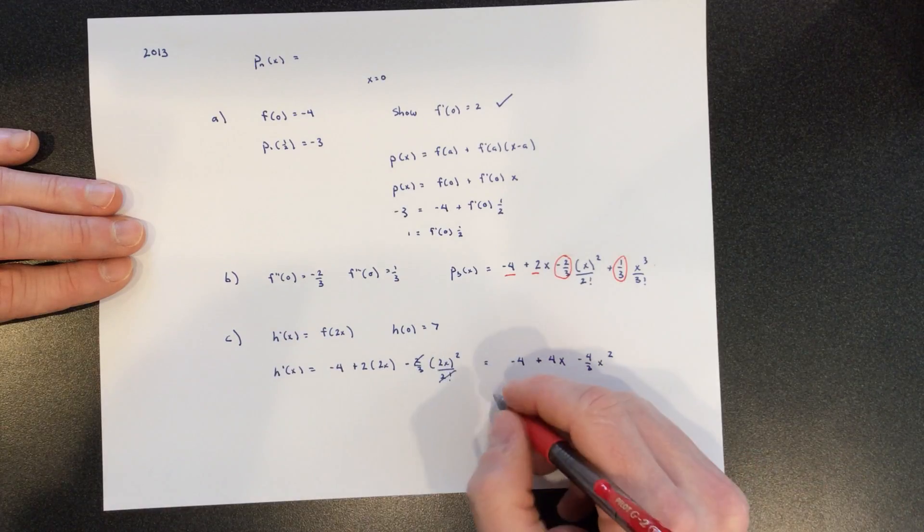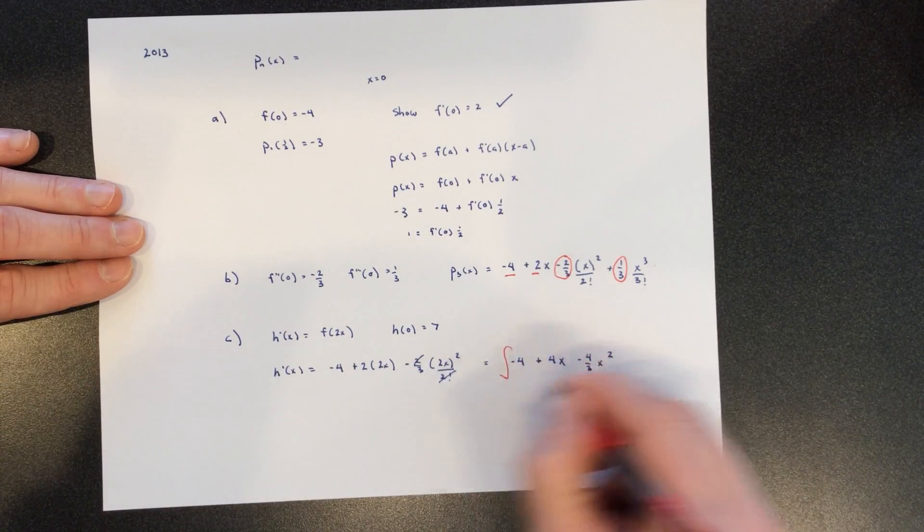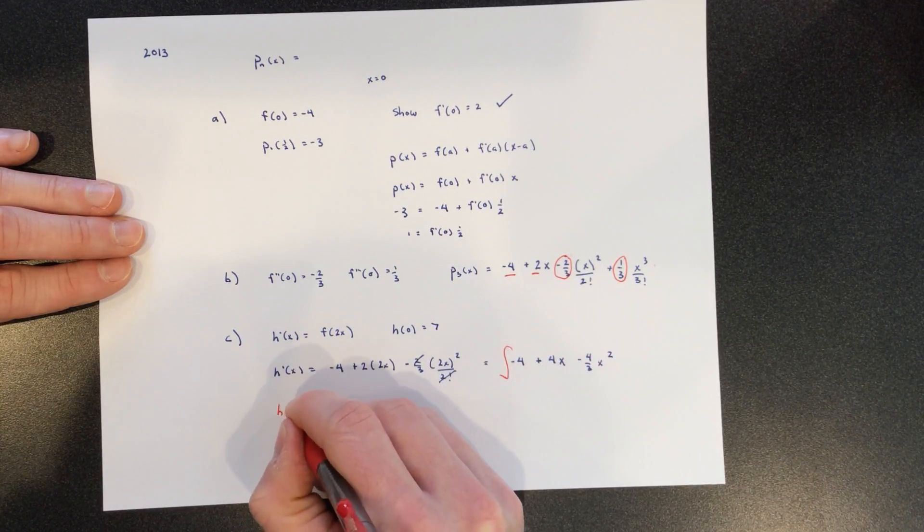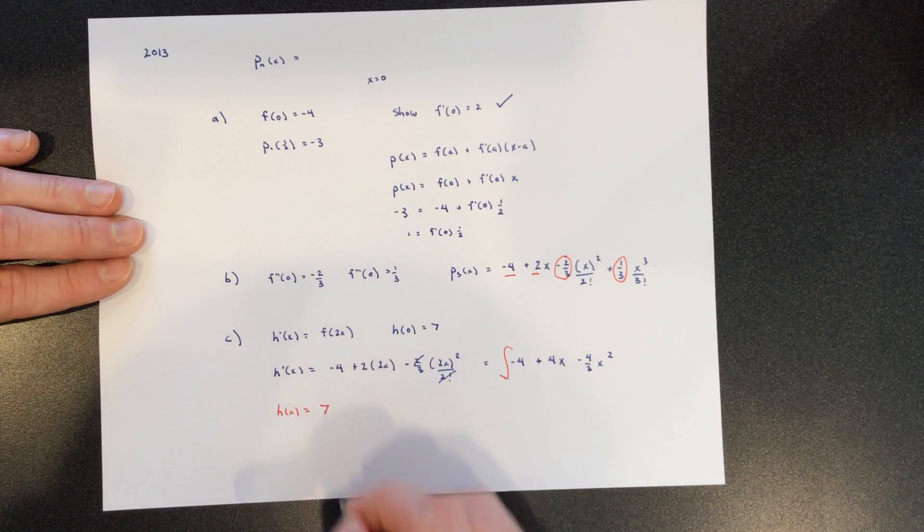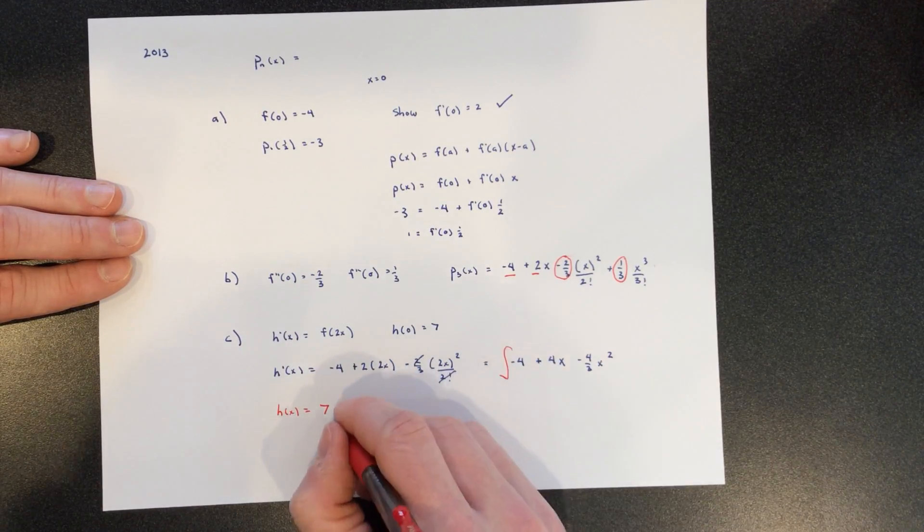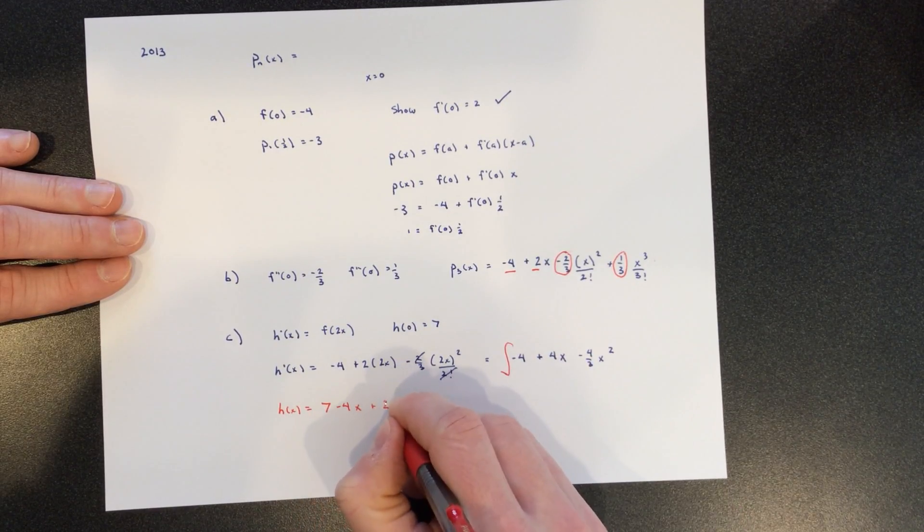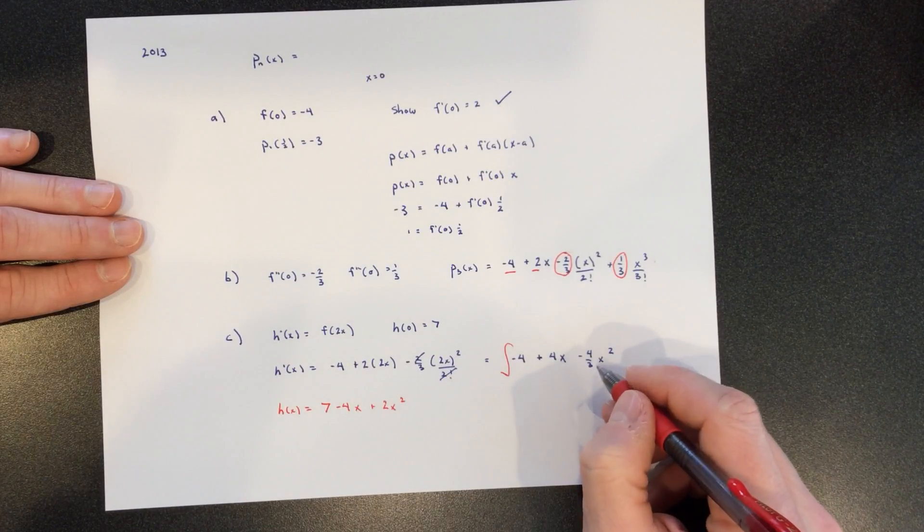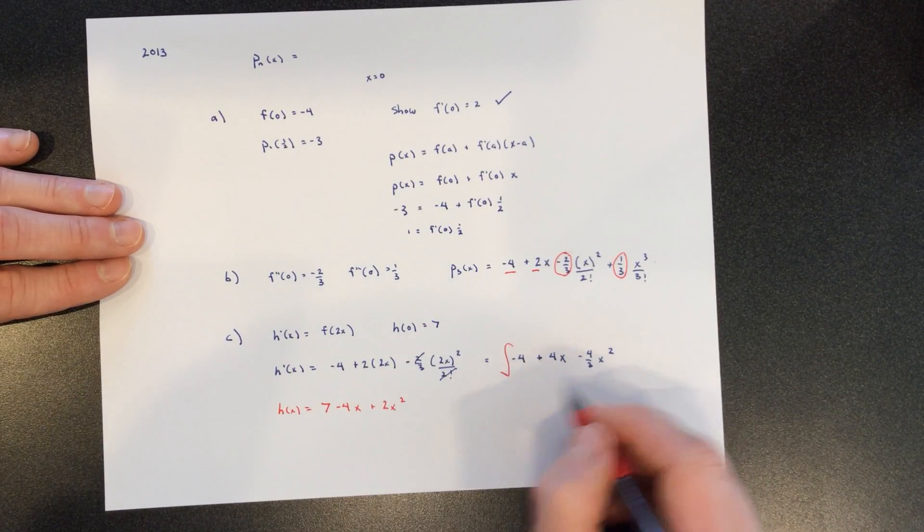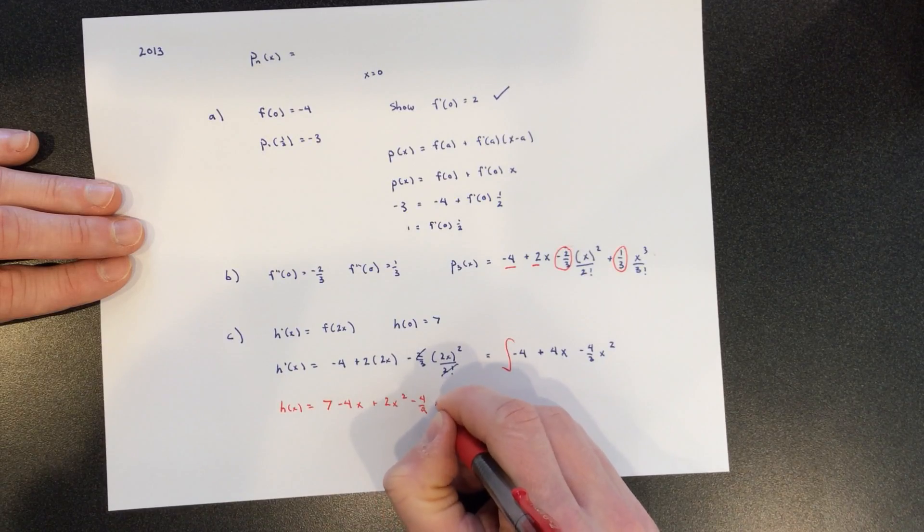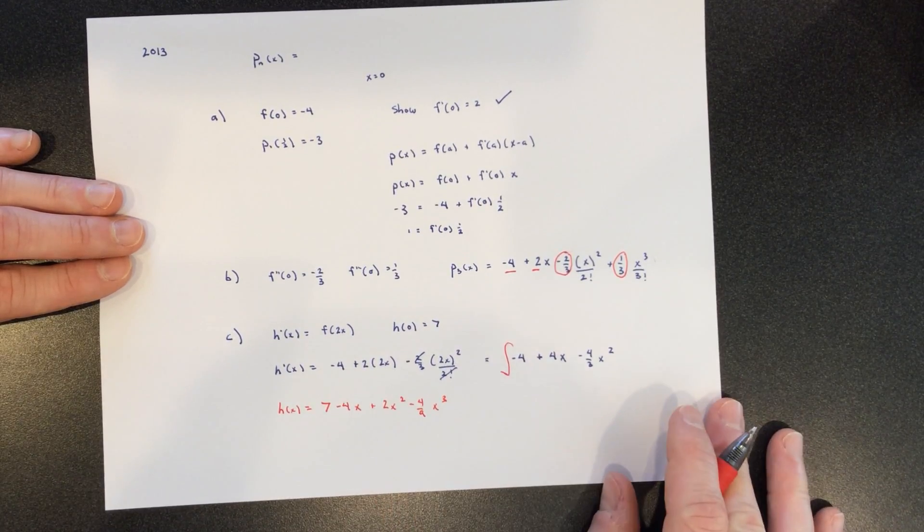And then we integrate. So the integral of H prime is H. They do tell us that H of 0 is 7. So we can just slap a 7 in there. And then we integrate negative 4 and get negative 4x. Integrating that gives us 2x squared. And integrating that, increase the power and divide by the new power, minus 4 makes x cubed. And now we have H.